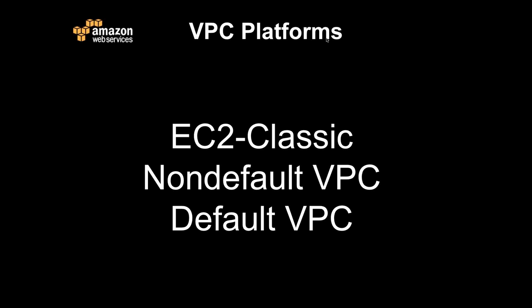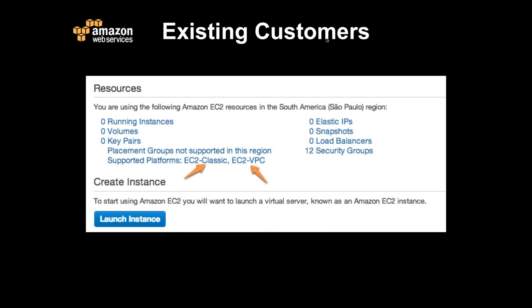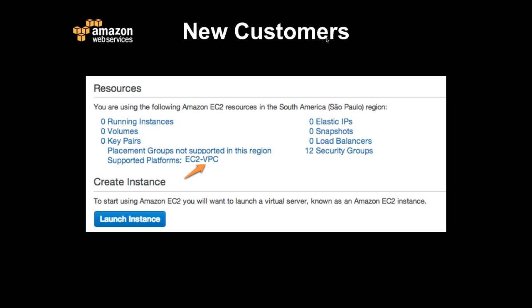All of our new customers are actually going to experience VPC by default. If you were an existing customer before we launched, you're going to see two different supported platforms — EC2 Classic and EC2 VPC. If you were a newer customer coming on board after we launched VPC by default, you actually have no choice anymore — you're going to launch all your instances within a VPC environment. You're not going to lose anything from VPC Classic. By default, we're going to create a VPC environment for you and manage those resources for you.